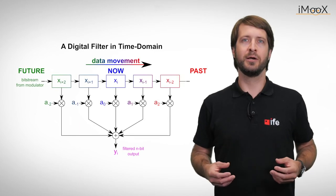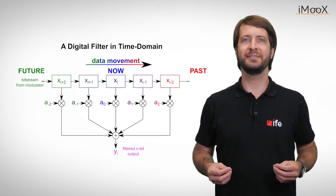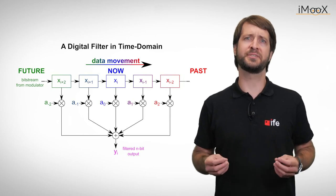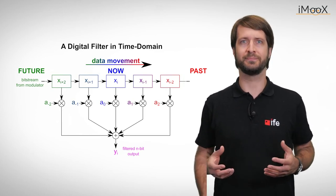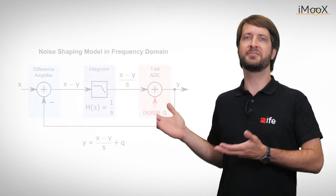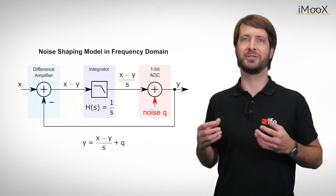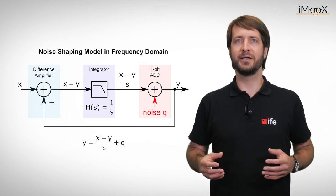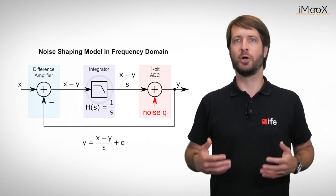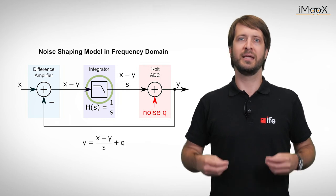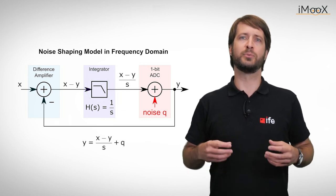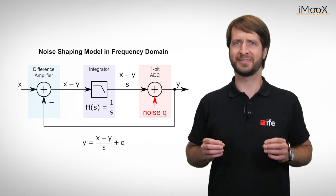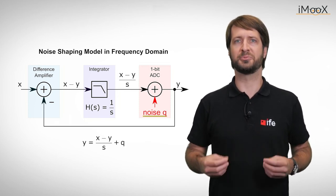This makes it plausible that the much higher resolution could be achieved compared to a simple averaging. This process will be even easier to understand if we make further simplifications and look at the whole process in the frequency domain. Just have a look at this frequency domain model of the modulator. As we saw in our last video, the integrator can be represented as a low-pass filter.